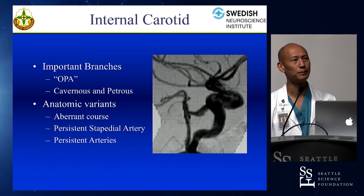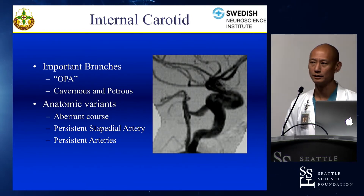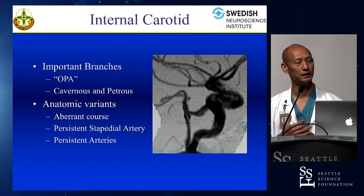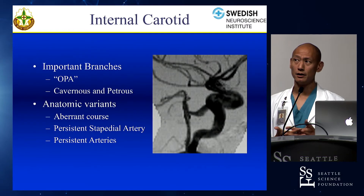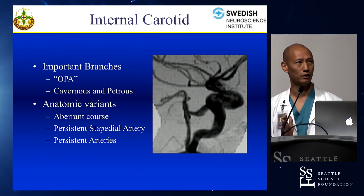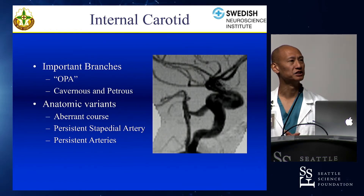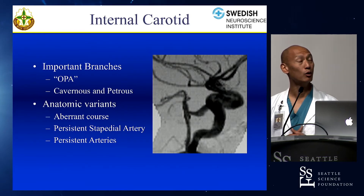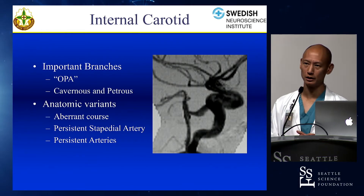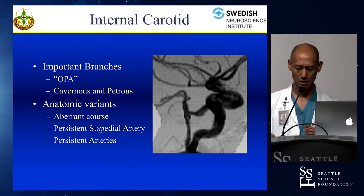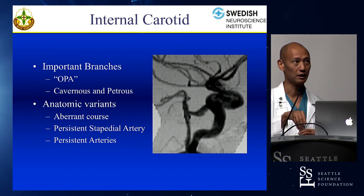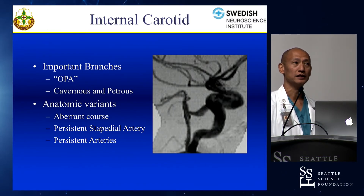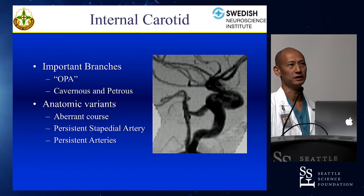Persistent stapedial arteries: the caroticotympanic branch of the ICA doesn't regress and connects to the middle meningeal artery — so you'll see a branch from the petrous ICA giving rise to the middle meningeal. That's fairly infrequent. Classic persistent arteries with embryological anterior-to-posterior circulation connections include the persistent hypoglossal artery, the otic artery, proatlantal arteries, and the persistent trigeminal — probably the most common. If you see what looks like a posterior communicating but the connection is coming from the posterior genu rather than the supraclinoid ICA, that's the persistent trigeminal artery.